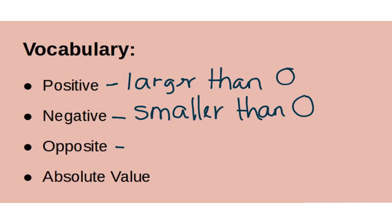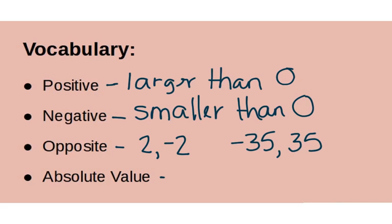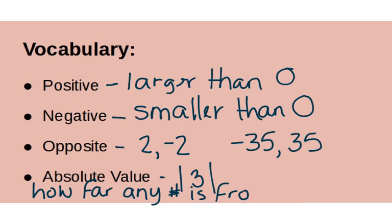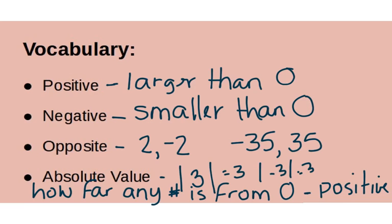Opposite: when we're talking about positives and negatives and integers, opposite means the number with the opposite sign. So the opposite of 2 is negative 2, and the opposite of negative 35 is 35. We're going to need that later in this lesson. Absolute value has lines on the outside of the number — it means how far any number is from zero. All absolute values are positive. The absolute value of 3 is 3, and the absolute value of negative 3 is also 3.